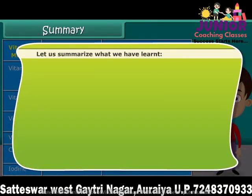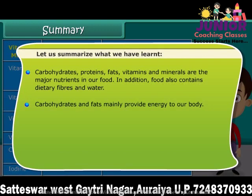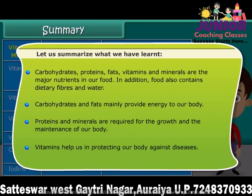Let us summarize what we have learned. Carbohydrates, proteins, fats, vitamins, and minerals are the major nutrients in our food. In addition, food also contains dietary fibers and water. Carbohydrates and fats mainly provide energy to our body. Proteins and minerals are required for the growth and maintenance of our body. Vitamins help us in protecting our body against diseases.